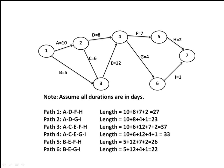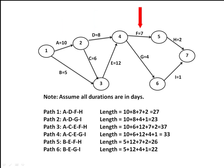Let's look at some of the actual paths of the workflow. Path 1 goes from node 1, the start of the project, through nodes 2, 4, and 5, and then to node 7, the end of the project. The actual work activities are A, D, F, and H, with the path having a length of 27 days.